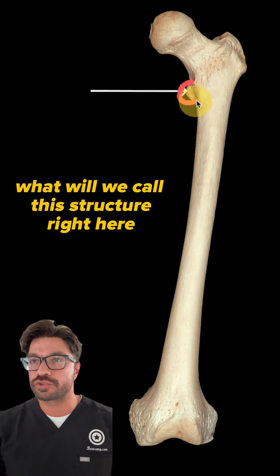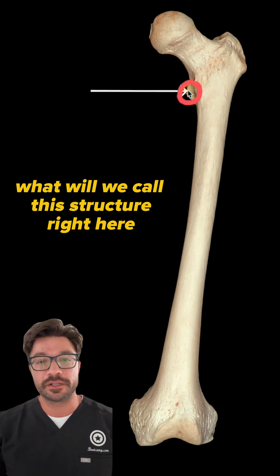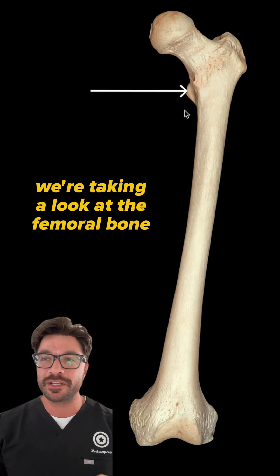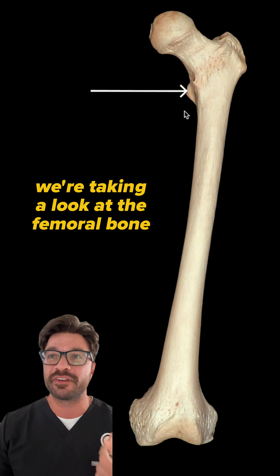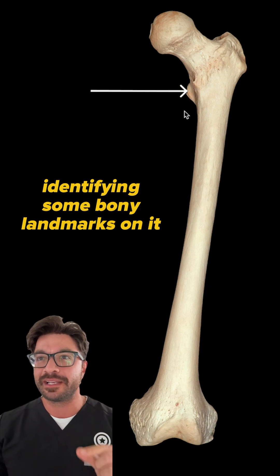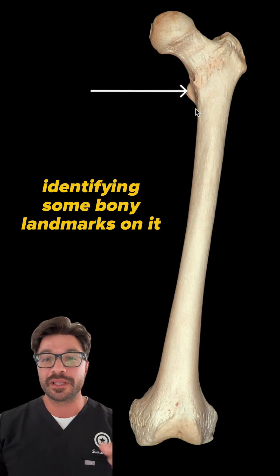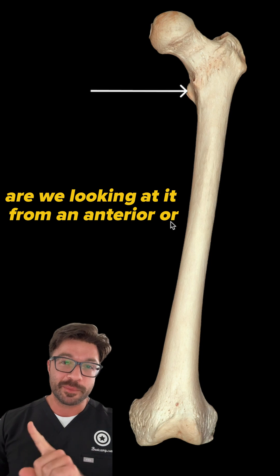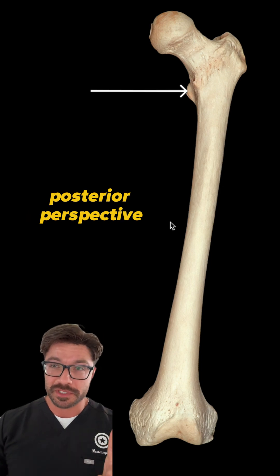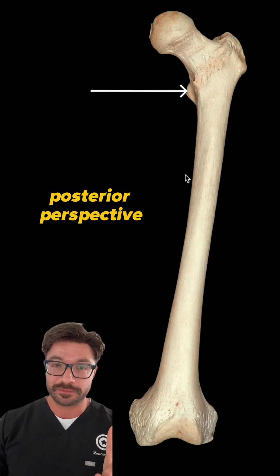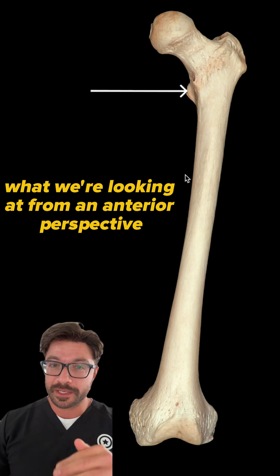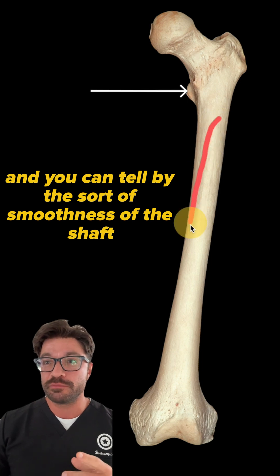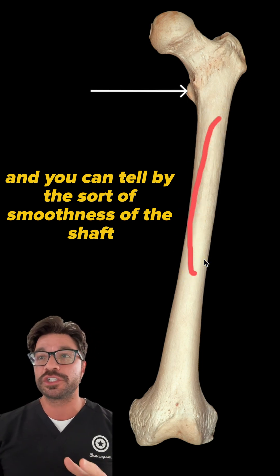From bootcamp.com, this video we're taking a look at the femoral bone, identifying some bony landmarks on it. Starting off first, are we looking at it from an anterior or posterior perspective? We're looking at it from an anterior perspective, and you can tell by the sort of smoothness of the shaft.